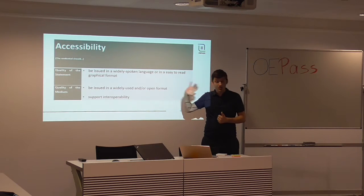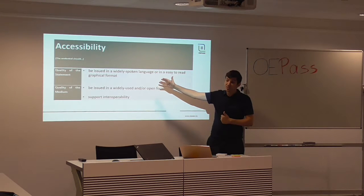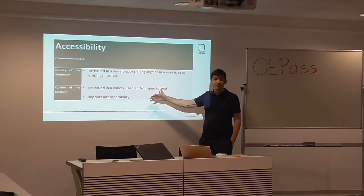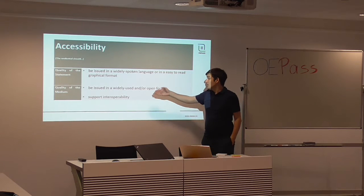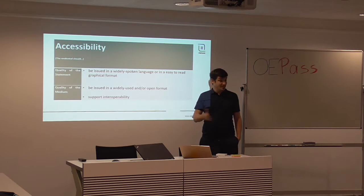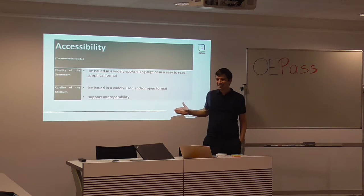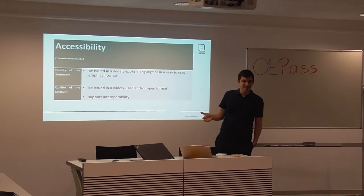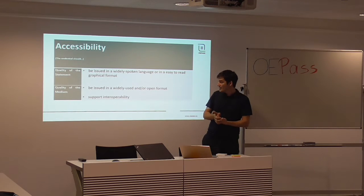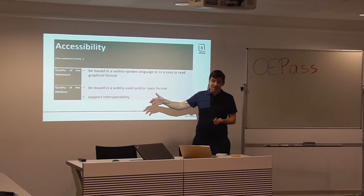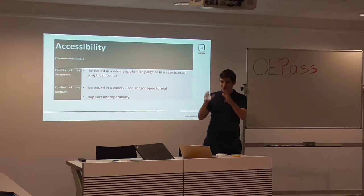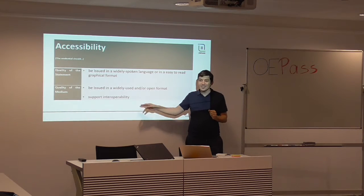Accessibility is something which is straightforward. In terms of the statement: widely spoken language or easy-to-read graphical format — the open badges philosophy. In terms of the medium: an interoperable medium and a widely used or open format. The interesting thing about paper is that paper is 100% interoperable. But whether it's an open format depends on how you write it. On the other hand, with digital, interoperability is more of a challenge, because just having one doesn't mean somebody else can read it. So even though digital can make things more automated, it doesn't necessarily make it more interoperable.